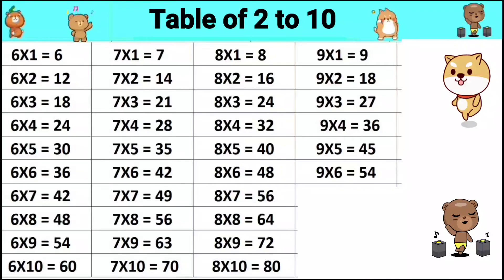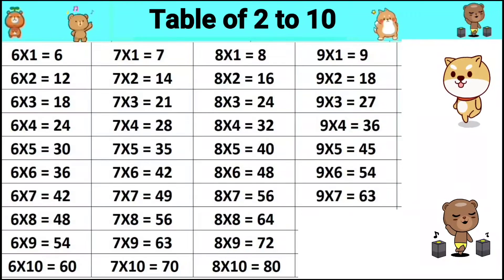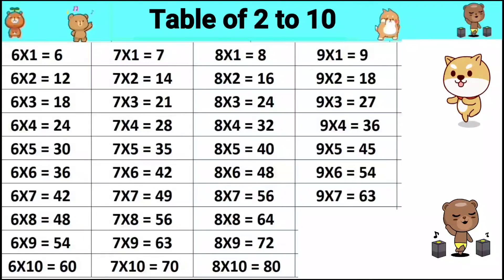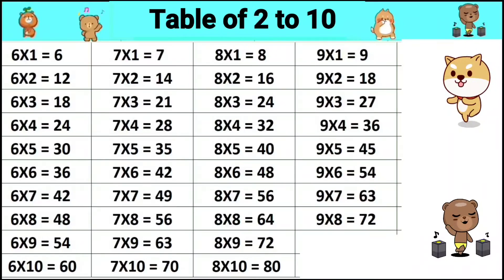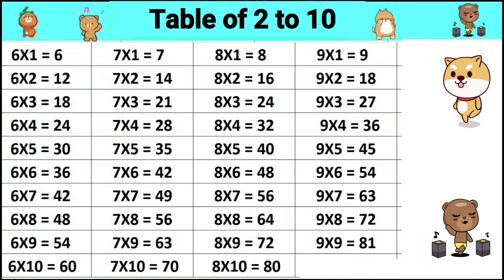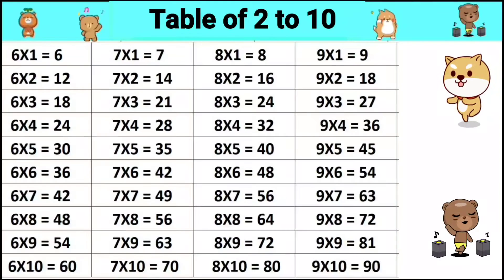9 sixes are 54, 9 sevens are 63, 9 eights are 72, 9 nines are 81, 9 tens are 90.